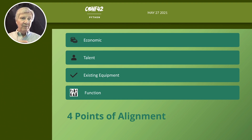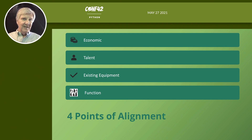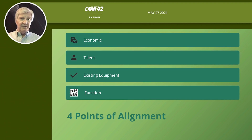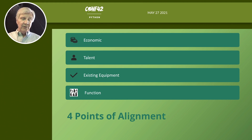No matter how big or small, four points of alignment are mission critical: economics, talent, existing equipment, and function. I've seen organizations want to replace software that already had the functionality they needed — they just hadn't gone to class or upgraded it. Existing equipment means: do we have assets in place that will do what we need, or do we need new assets? And we need people who know how to operate in the environment.